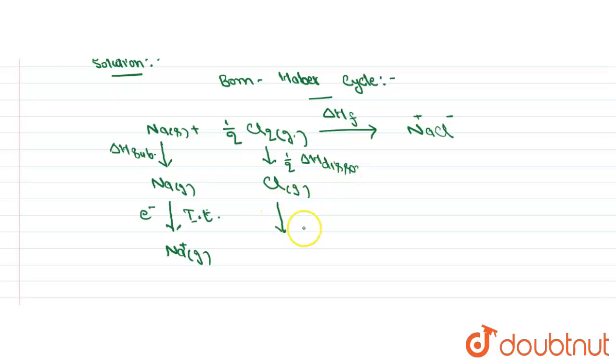And this Cl gas accepts one electron and converts into Cl minus gas. The amount of energy required is known as delta H of electron gain enthalpy.